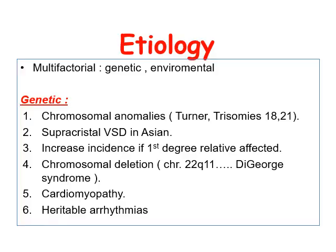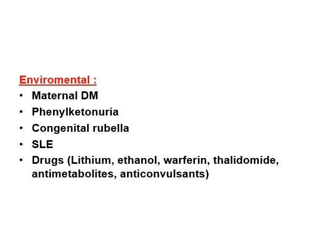The etiology of congenital heart disease is multifactorial, with both genetic and environmental factors. Genetic causes include chromosomal anomalies like Down syndrome, Turner syndrome, and Edwards syndrome. Supracristal VSD is more common in Asian populations with increased incidence in first-degree relatives. Chromosomal deletion at chromosome 22q11 causes DiGeorge syndrome. Cardiomyopathy has genetic causes. Environmental causes include maternal diabetes mellitus, phenylketonuria, congenital rubella, and drugs such as lithium, ethanol, warfarin, thalidomide, anti-metabolites, and anticonvulsants.